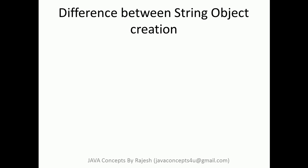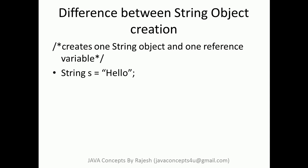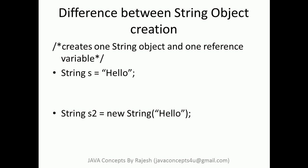Next we'll see the difference between the two ways of creating string objects. The first option is: `String s = "hello"` — this creates one string object and one reference variable. The string object is kept in the String Constant Pool. The second option is: `String s2 = new String("hello")`.